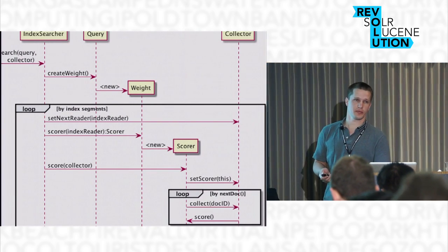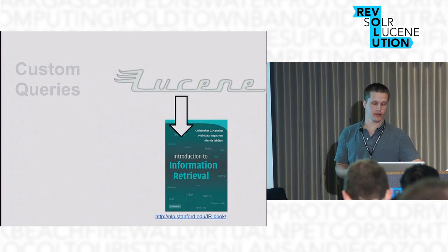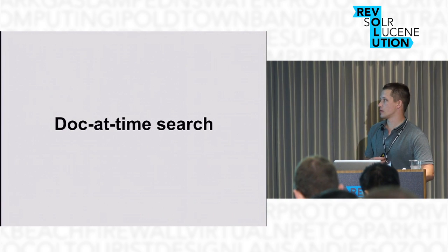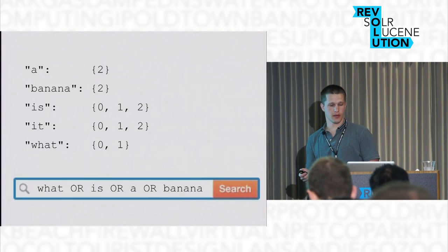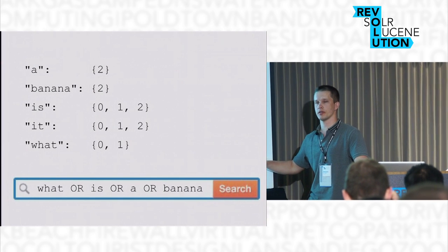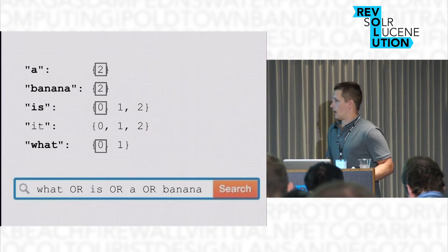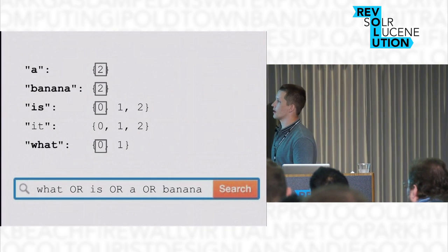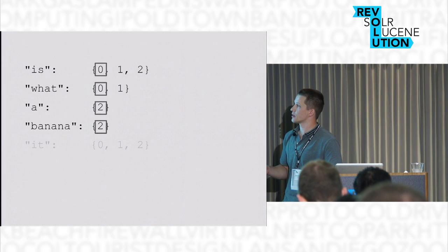We already know all we need from Lucene and are ready to create a scorer. Now we need to check the core algorithms from the theory of information retrieval. First, we need to look at document-at-a-time search. We have a sample index and a disjunction query submitted for execution — a query with optional terms. To execute this query in document-at-a-time search, we start from creating scorers for every query term, put them at the beginning of the postings list, and on every step of the search, we order the scorers by the current document ID.